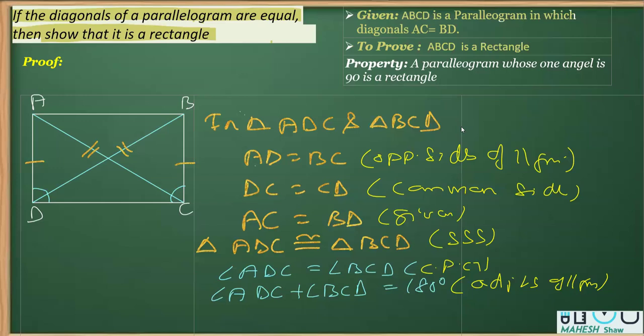Now, as I can see that these two angles are equal, so I can replace BCD with ADC. As you can see from this equation one, I can write BCD as ADC is equal to 180 degrees. That means twice of ADC is equal to 180 degrees.